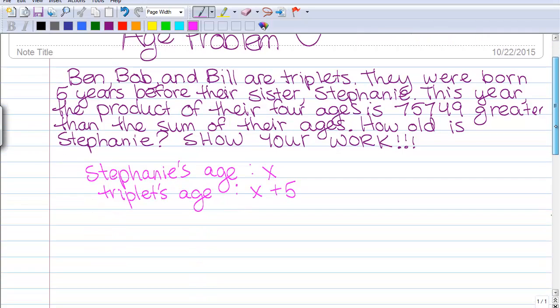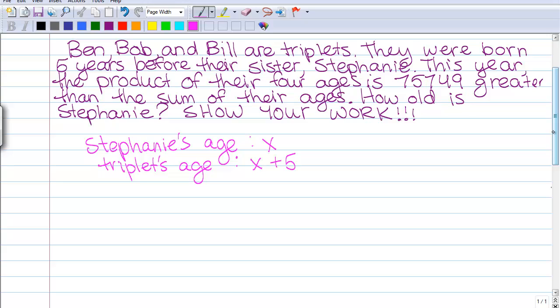So if the product of their four ages is X times X plus 5, this is equal to 75,749 greater than the sum of their ages, which is expressed as X plus 3 times X plus 5.